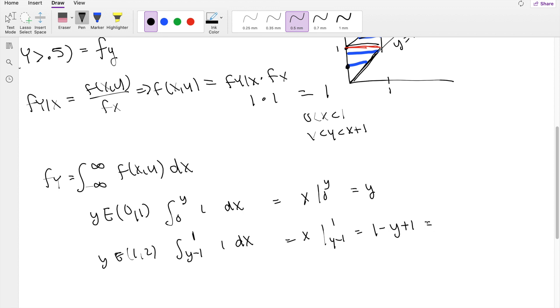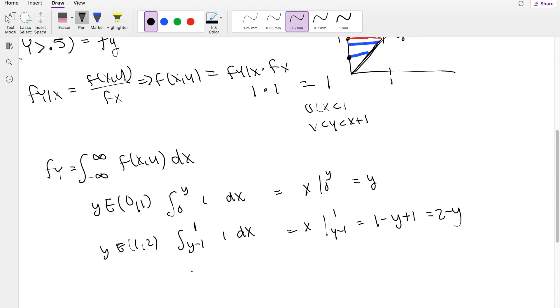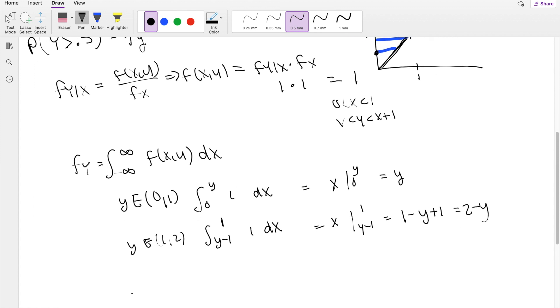This one is going to be x integrated from y minus 1 to 1, so then this is equal to 1 minus y plus 1, which is equal to 2 minus y. So then when we're asked to find the probability that y is greater than 0.5, when y is greater than 0.5, so 0.5 to 1 for y, this is our marginal distribution function, y dy.